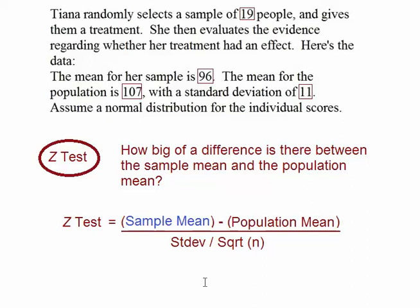So now we're at the plug and chug portion of discussing the z-test. Our z-test formula is sample mean minus the population mean over the quantity of the standard deviation divided by the square root of the sample size.